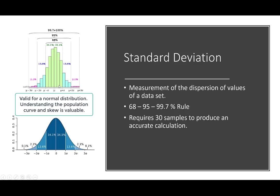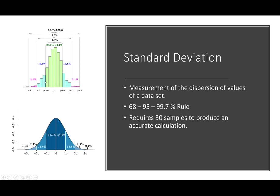Within two standard deviations, plus or minus from the mean, you have 95% of the population in that range, and so on. As you go to three and four standard deviations away, the percentage that resides outside that area is very, very small. When calculating the standard deviation, we want at least 30 good samples in that population to accurately calculate it. Anything less and you're making an assumption about the standard deviation of that population, and we don't want to make any assumptions at this time.